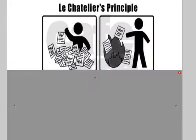We talked yesterday about systems at equilibrium — this dynamic equilibrium where there's a balance occurring, where the forward rate of reaction is equal to the reverse rate of reaction. We kind of have an equilibrium between you and me: I don't assign you too much homework, and you do your homework. That's our balance.